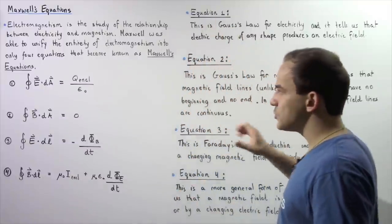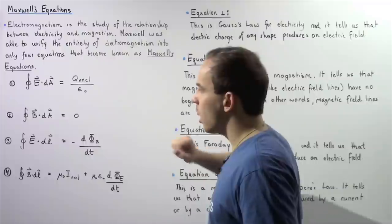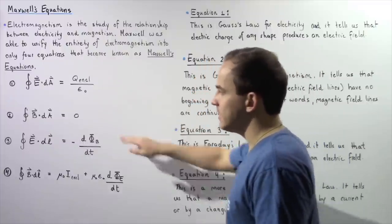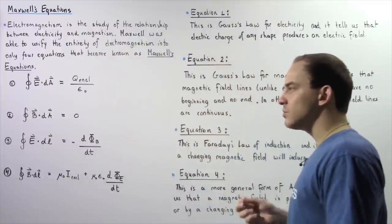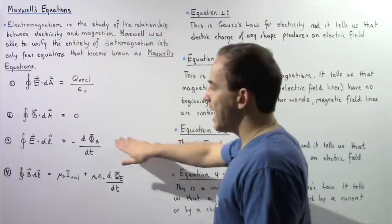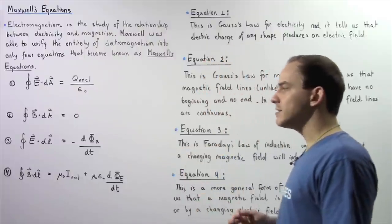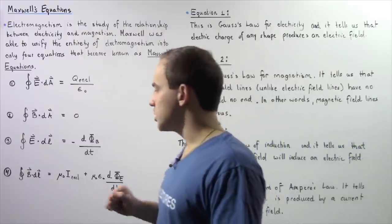As we'll see in just a moment, equation one is Gauss's law for electricity, equation two is Gauss's law for magnetism, and equation three is Faraday's law of electromagnetic induction.